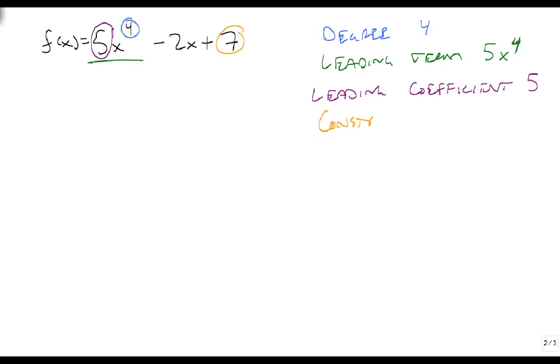The constant term is the degree 0, or the one that's missing an x, and so that's 7. So here are the properties of this particular polynomial function.